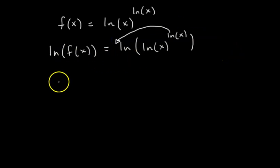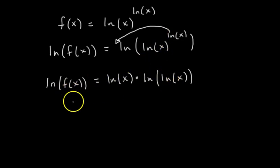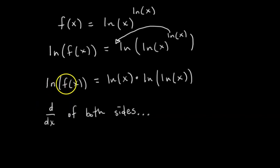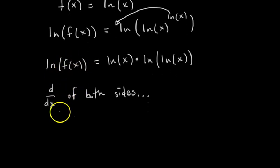Before you do any differentiating in logarithmic differentiation, you want to take the natural log of both sides. We did that because now we have this exponent ln of x within the parentheses of a natural log, and so now we can take this ln of x and bring it down in front. The next step is to take d/dx of both sides. The derivative of the left side with respect to x is the derivative of ln of f of x, which is 1 over f of x times the derivative of f of x.